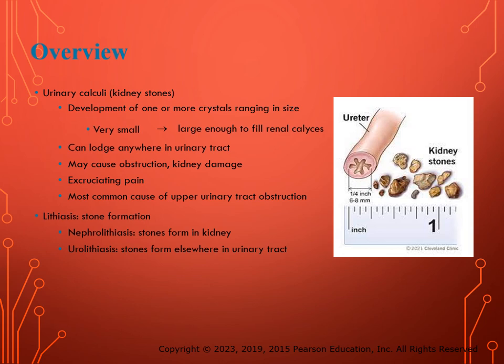Urinary calculi are one of the most common causes of upper urinary tract obstruction. Lithiasis means stone formation — nephrolithiasis when stones form in the kidney, urolithiasis when they form elsewhere such as the bladder. In the US, kidney calculi affect approximately 1 in 11 individuals. The different types of stones are on page 360: calcium phosphate or oxalate is most common, then struvite, then uric acid, and cysteine, which is uncommon. You need to know the differences.